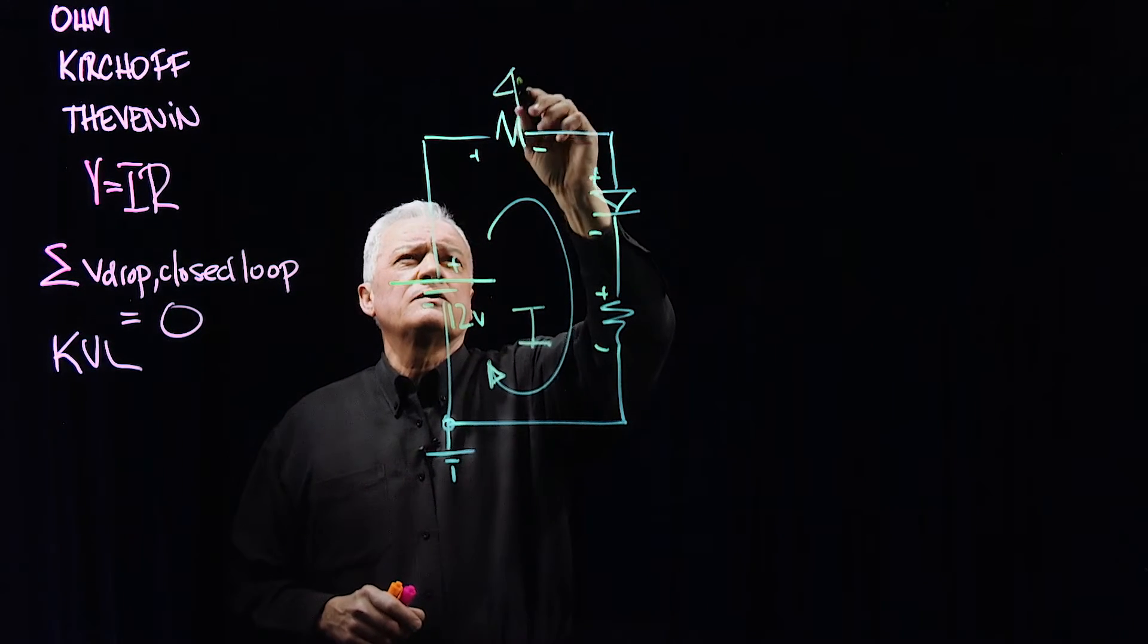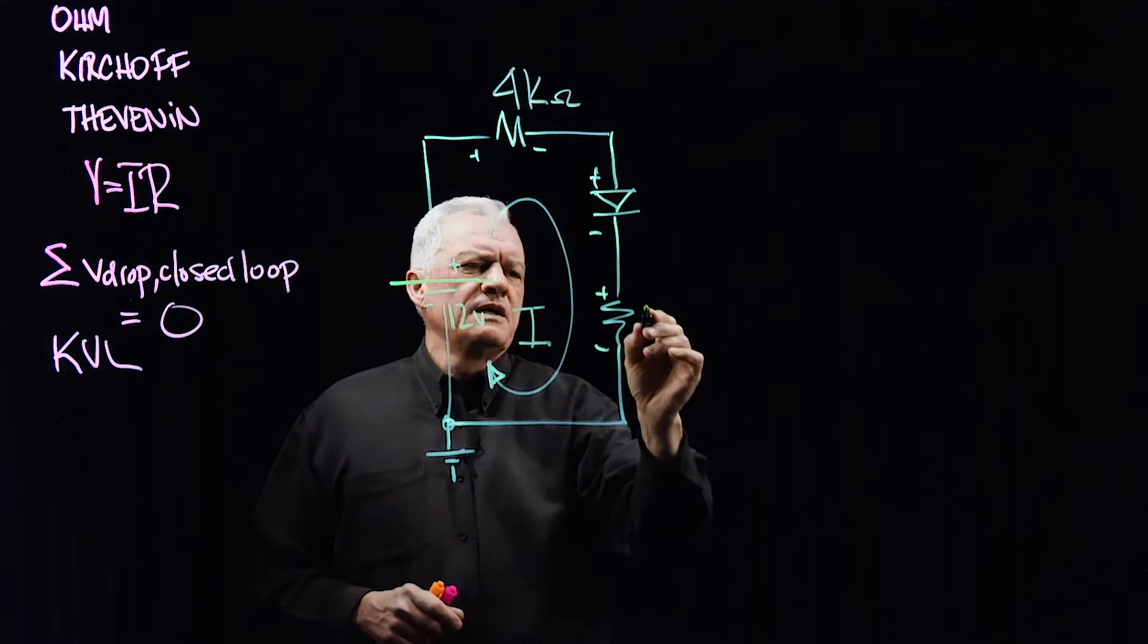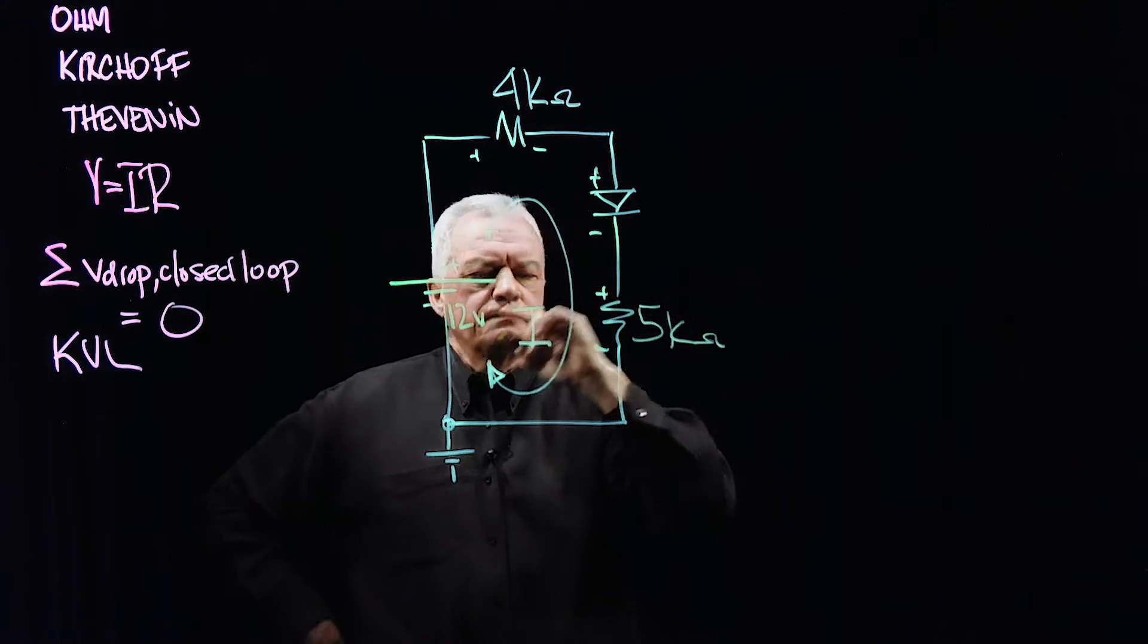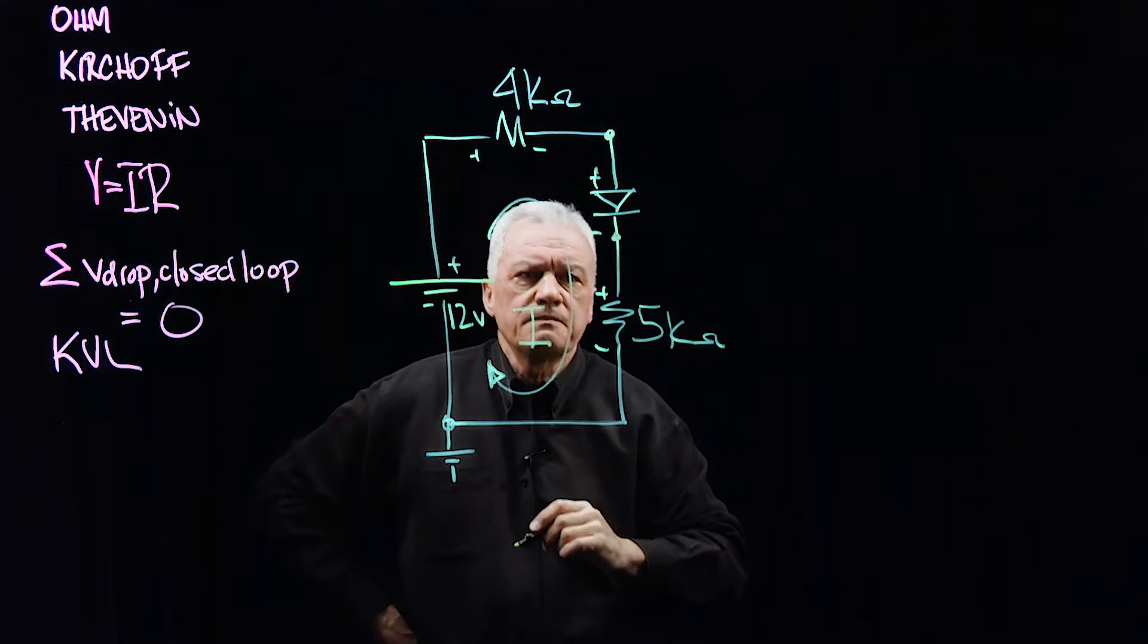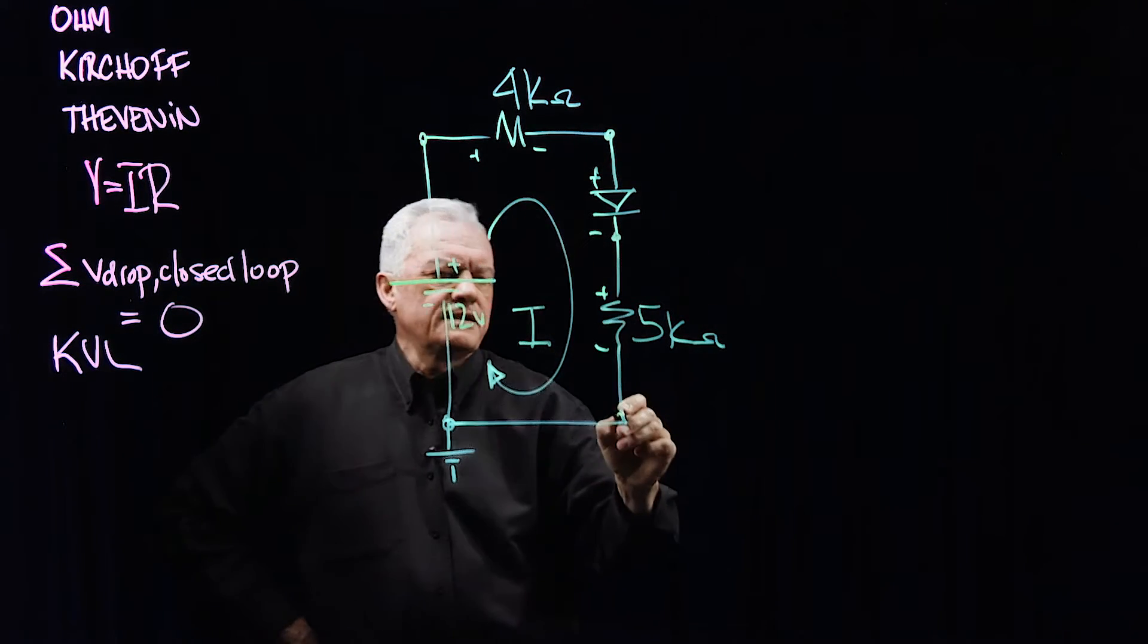Let's try 4,000 ohms for this one, 5,000 ohms for this one. Now, this device, which may be new to you, maybe not, but is a diode.